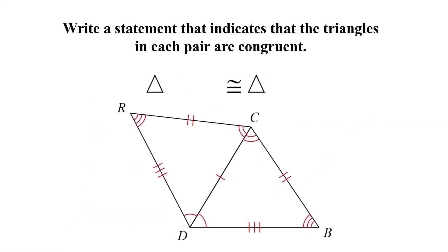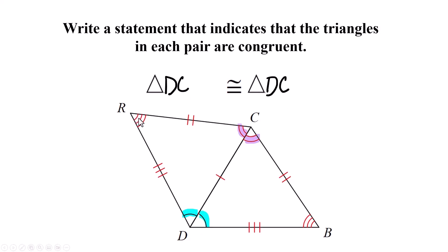Try this one — pause the video, otherwise I'll do it in three, two, one. Down here at D, both triangles share that vertex, so both start with D. They're also sharing that point, so both have a C. For this triangle you have R, which goes with B. These are fun because you just work with the angles, not the sides.